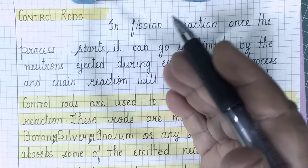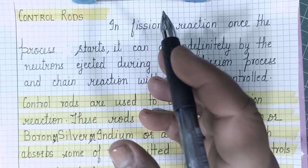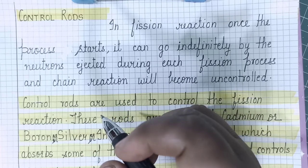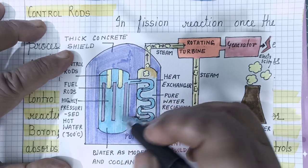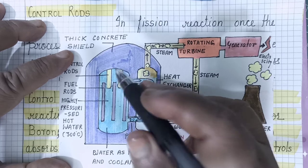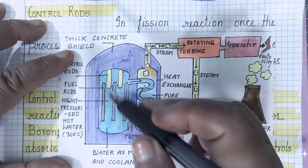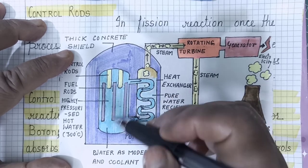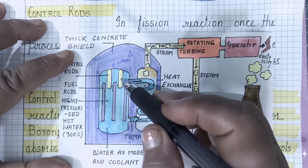From previous year questions, we have seen questions about coolant, moderator, and control rods. Let us understand what control rods are and their function. The fission taking place in the nuclear reactor core is a controlled chain reaction in which two of the neutrons obtained from the fission process of uranium-235 are absorbed, and that absorption is done by the control rods.